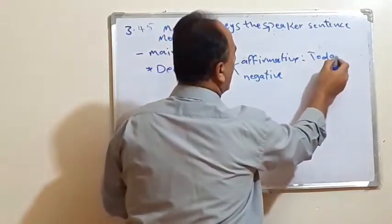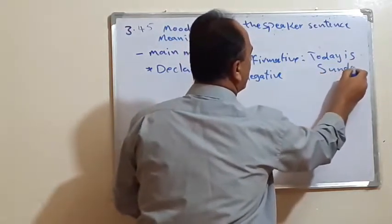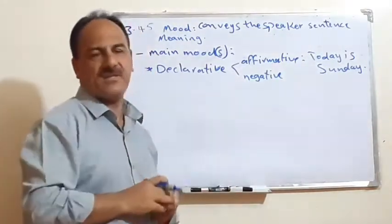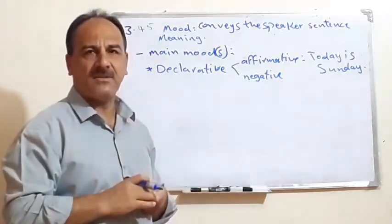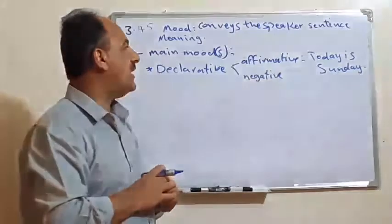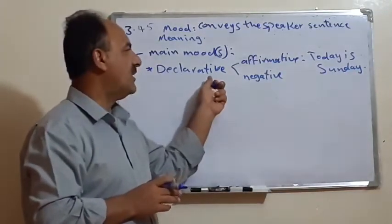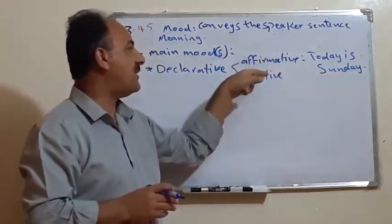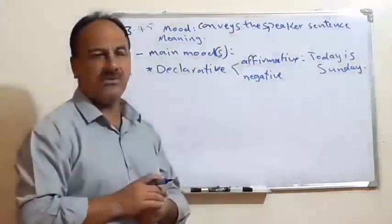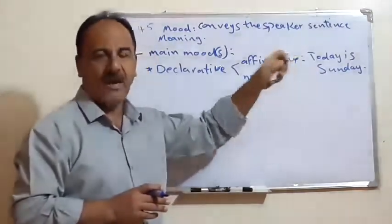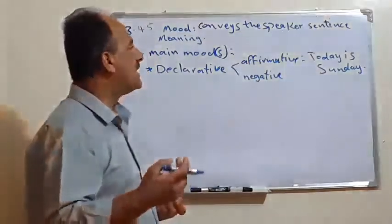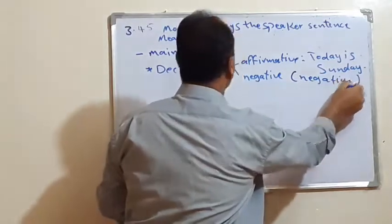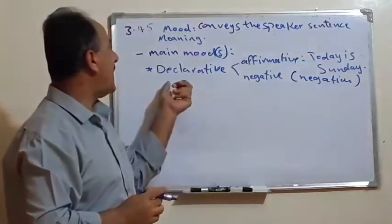For example, declarative: 'Today is Sunday,' 'I am here,' 'You are a student,' 'Iraq is a big country.' Whatever — just to tell information, we call it declarative or statement. And the opposite, if we add 'not,' for example: 'Today is Sunday' is affirmative, 'Today is not Sunday' is negative. 'I am not here,' 'You are not John,' 'She is not happy,' etc. So, adding negation to the sentence changes it from affirmative to negative. This is the first type of the mood.